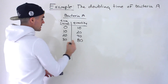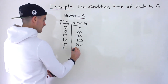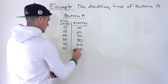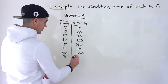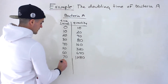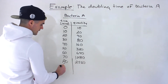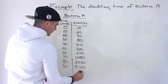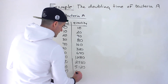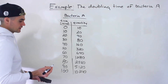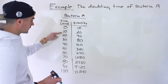At 30 minutes the quantity is 80. At the 40-minute mark it's 160. At 50 minutes it's 320. At 60 minutes it's 640. At the 70-minute mark it's 1,280. At 80 minutes it's 2,560. At 90 minutes it's 5,120. And going up to 100 minutes, doubling 5,120 gives us 10,240. That's the quantity of bacteria A after 100 minutes — doubling every 10 minutes.